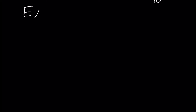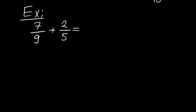Another example: 7 over 9 plus 2 over 5. Now we transform our fractions to two fractions with the same denominator. The least common multiple of 9 and 5 will be 45. We write the first fraction with denominator 45 and we have to multiply 7 by the number 5.